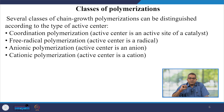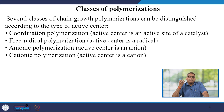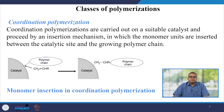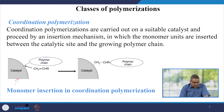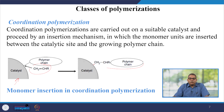In cationic polymerization, the active center is a cation. Coordination polymerization is carried out using a suitable catalyst and proceeds by an insertion mechanism in which monomer units are inserted between the catalyst site and the growing polymer chain. Here you can see the linkage between the catalyst and polymer chain, where R represents the chain. This is called monomer insertion in coordination polymerization.